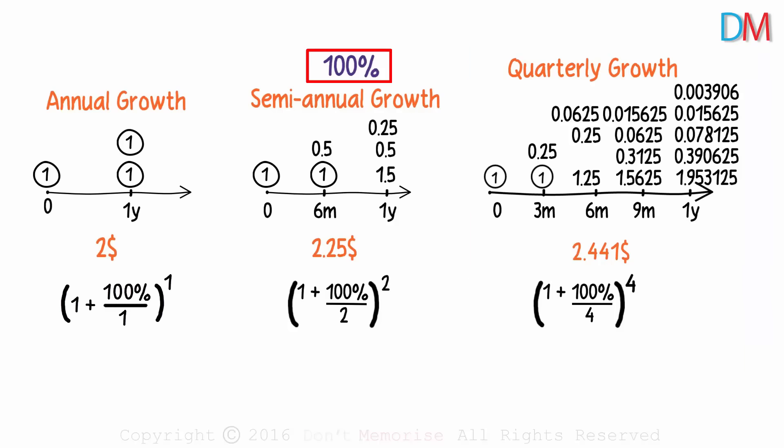The one hundred percent is nothing but one. If two time periods, then we have two here. If four time periods, then four here. So the formula for n time periods would be (1 + 1/n)^n. Clearly, more the number of time periods, higher will be the returns. This will give us the dollar value at the end.